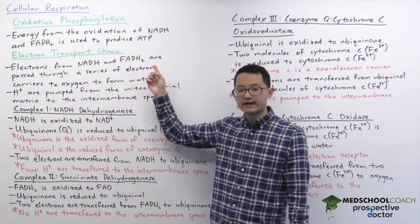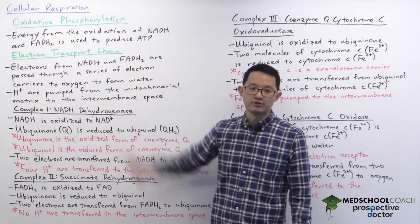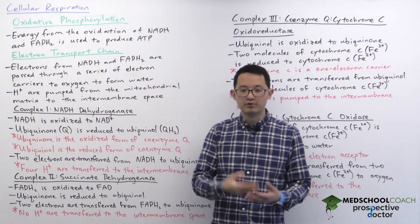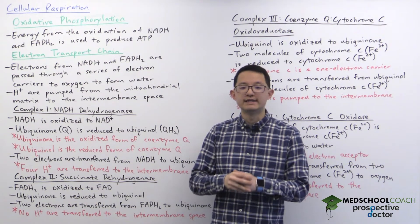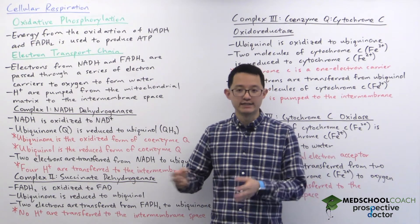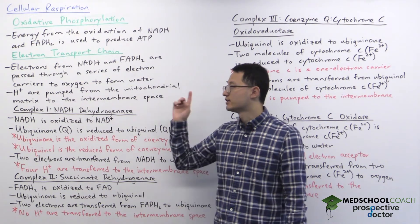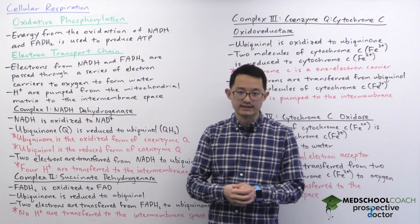Now you should note that this is a two-step process. In the first step, we use the electron transfer chain to produce a proton gradient. In the second step, we're going to use ATP synthase, which uses that proton gradient to produce ATP. So in this video we're going to talk about the electron transfer chain. In the next video we'll talk about ATP synthase.